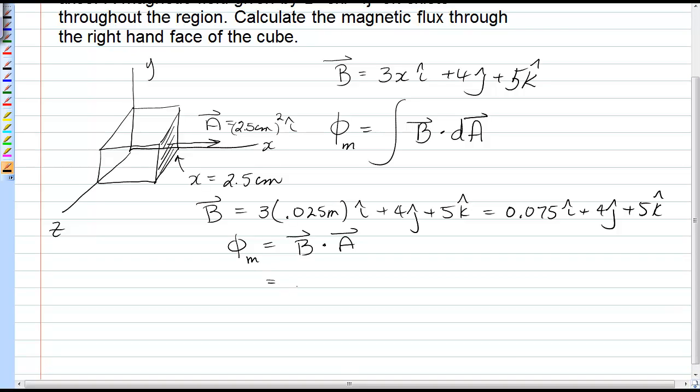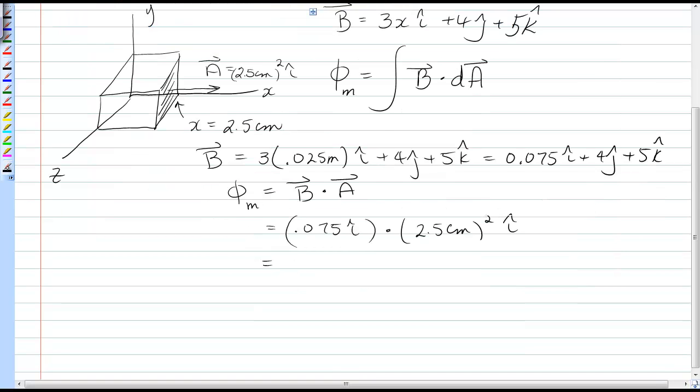So, if we dot the magnetic field vector with the area vector, we pick up only the i hat components, and we end up getting 0.075 i hat dot 2.5 centimeters squared i hat. Magnetic flux is just a scalar. And when you dot those together, you get 46.9 micro Webbers, because magnetic flux comes in units of Webbers.